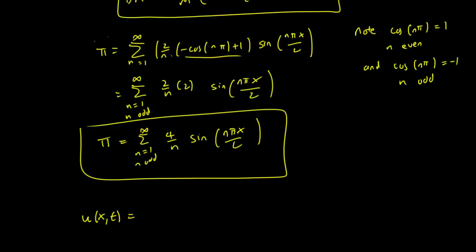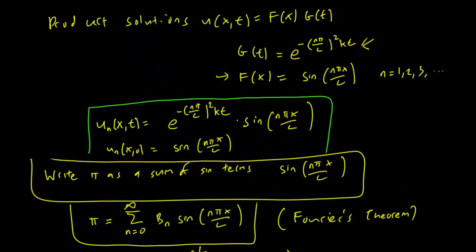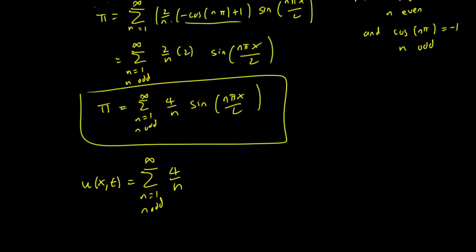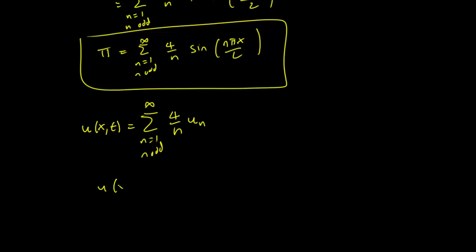And we want to replace all the sine terms with the u_n terms. So we have here n equals 1 and odd again, infinity, 4 over n. Instead of sin(n pi x over L), because the initial condition of the product solution is sin(n pi x over L), so we replace this with u_n. And this is exactly our solution to the original problem.